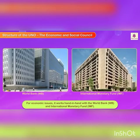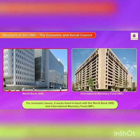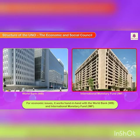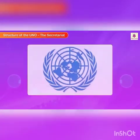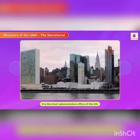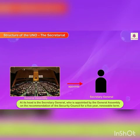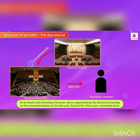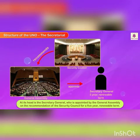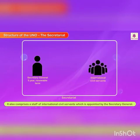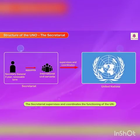For economic issues, it works hand-in-hand with the World Bank, i.e. WB, and the International Monetary Fund, i.e. IMF. The Secretariat: It is the Chief Administrative Office of the UN. At its head is the Secretary General, who is appointed by the General Assembly on the recommendation of the Security Council for a five-year renewable term. It also comprises a staff of international civil servants appointed by the Secretary General. The Secretariat supervises and coordinates the functioning of the UN.